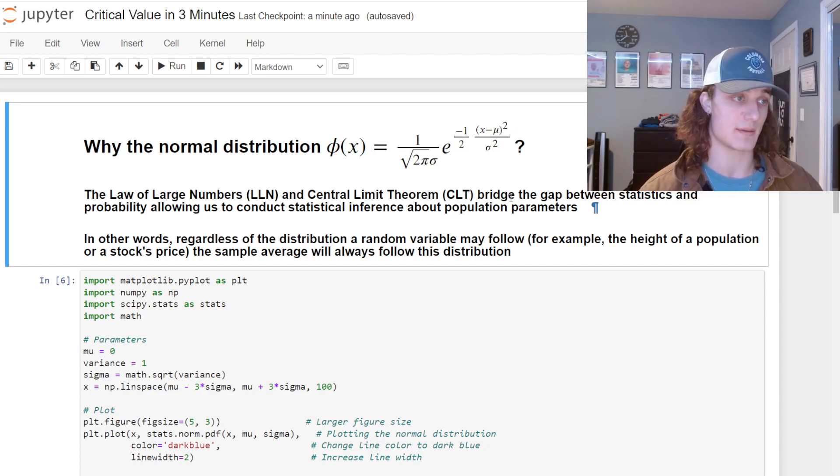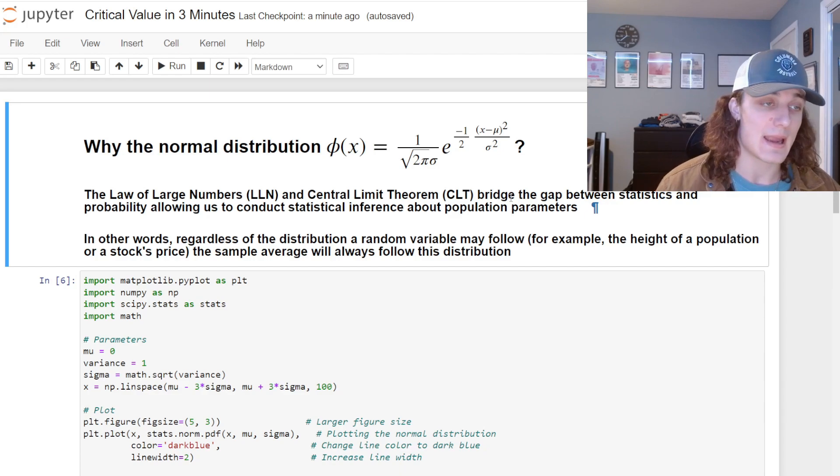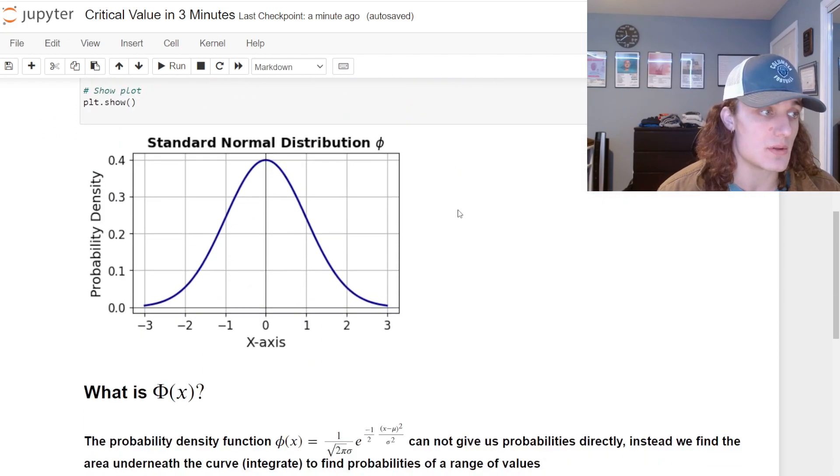Like a stock price or population height, and we know it's going to follow a normal distribution. So it's going to look something like this after standardization. This is the distribution of the sample average - that's lowercase φ (phi) right here.